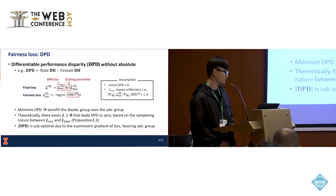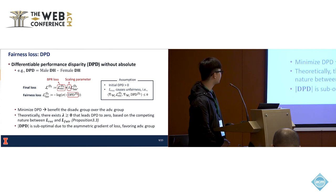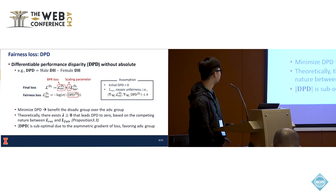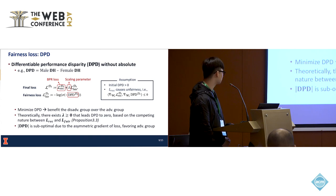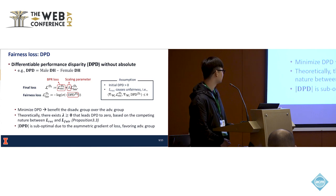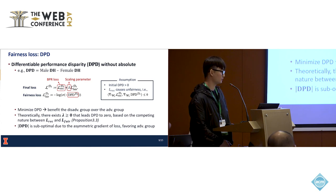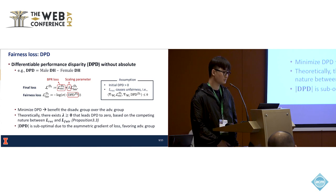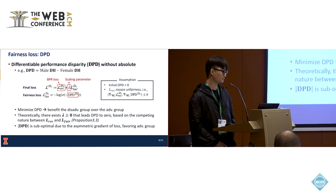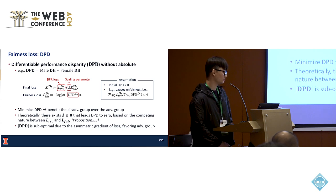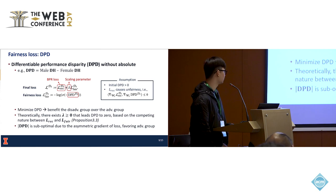Based on DH, we define the differentiable performance disparity — for example, average male DH minus average female DH. This disparity DPD is minimized by our fairness loss, which intuitively benefits the disadvantaged group over the advantaged group. Theoretically, we show there exists a lambda that drives DPD to zero, based on the competing nature between recommendation loss and fairness loss — assuming that minimizing recommendation loss alone causes unfairness. We also avoid using absolute DPD because it is suboptimal due to the asymmetric gradient of the loss, which slightly favors the advantaged group.